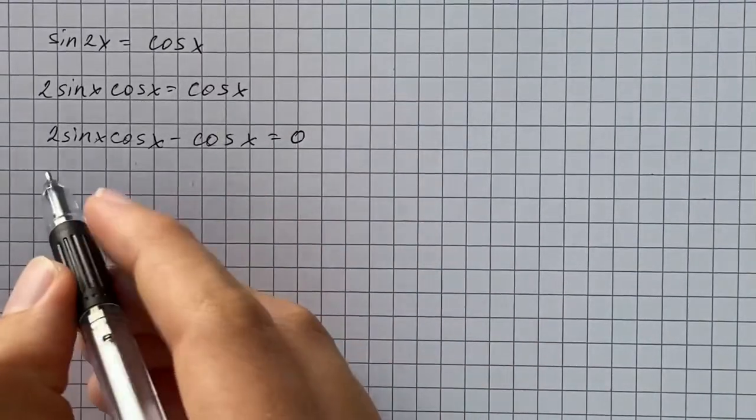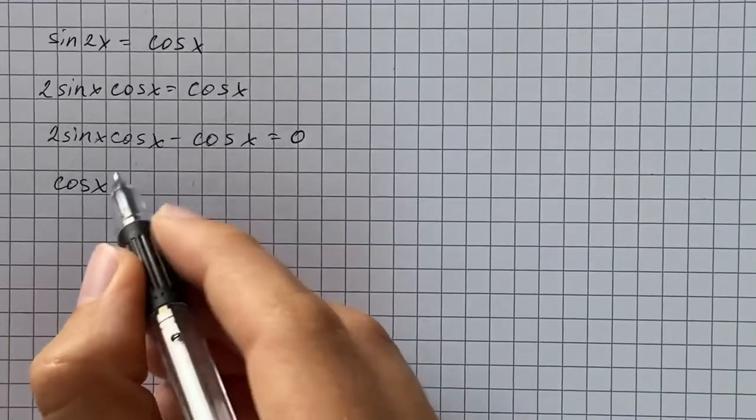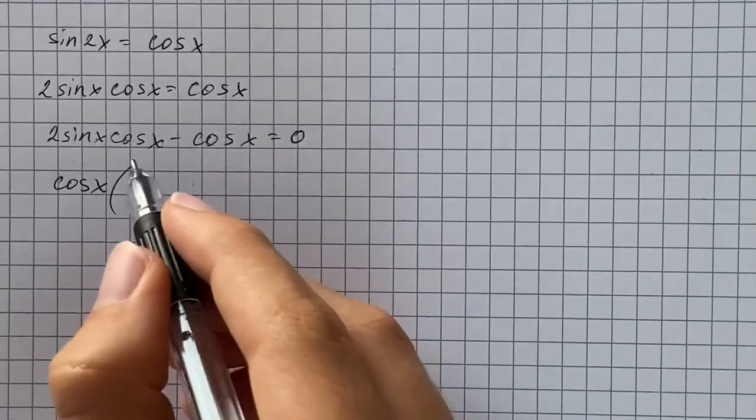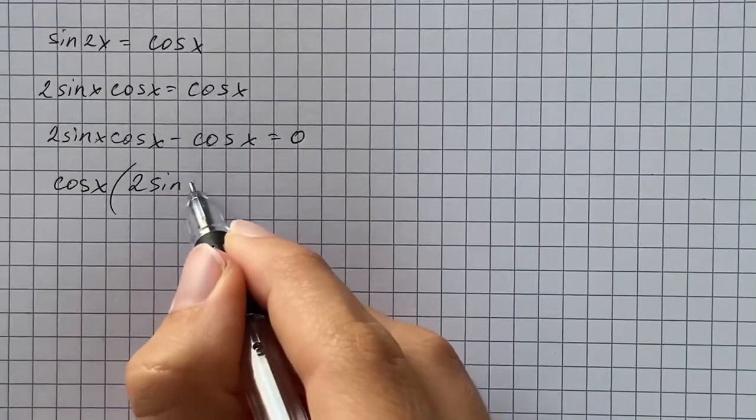Then we're going to factor this. So we factor out cosine of x and we're left with 2 sine of x minus 1.